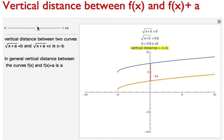You can move this and understand how this vertical distance is calculated. The vertical distance is nothing but c minus a for this type of curves. This is square root curve.